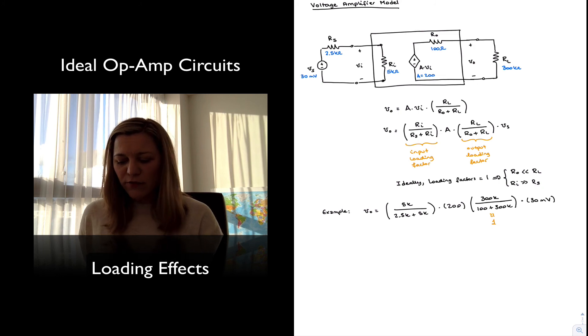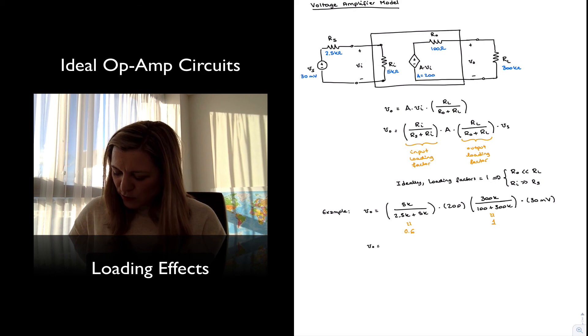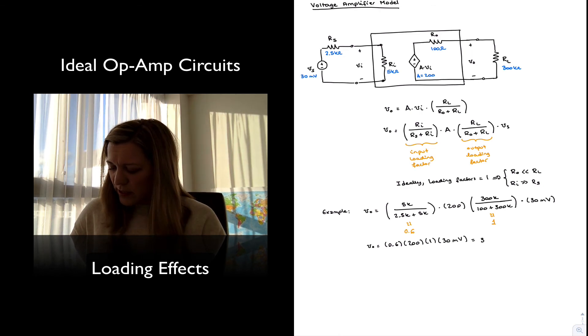But my input loading factor, my input resistance and my source resistance are comparable. If I make a calculation, my input loading factor is equal to 0.6. That is going to drop my output voltage from the expected value of 6 volts quite substantially. I'm going to have my V_out being equal to 0.6 times 200 times 1 times 30 millivolts, which ends up being 3.6 volts.